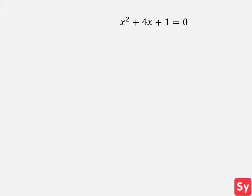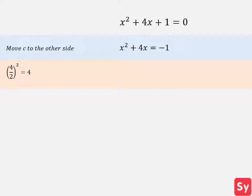Second example: we have the equation x squared plus 4x plus 1 equals 0. First, we want to move c to the other side, so we subtract 1 from the other side. Next, we take b, which is 4, divide it by 2, and square it. This equals 4, and we add it to each side.